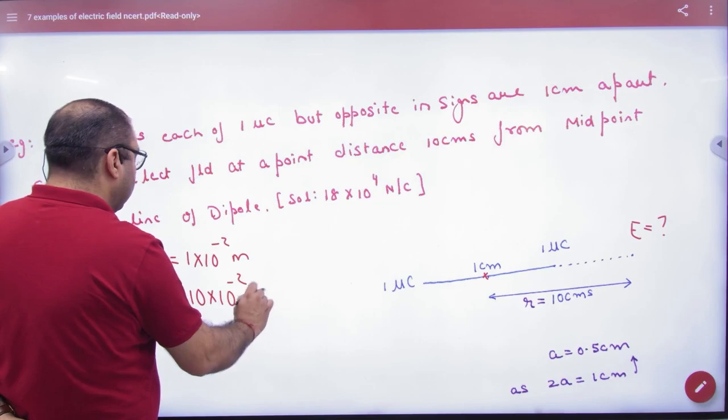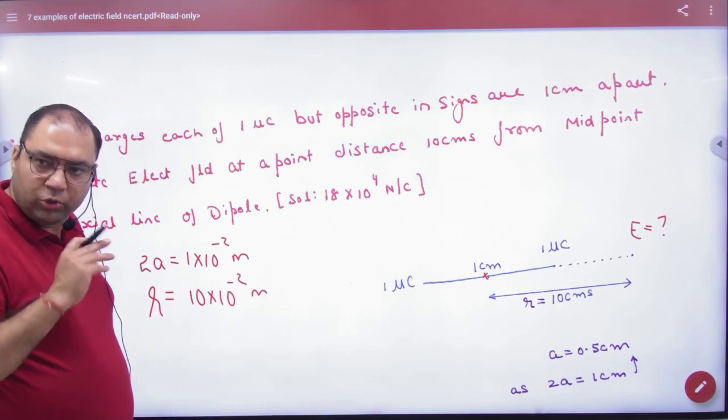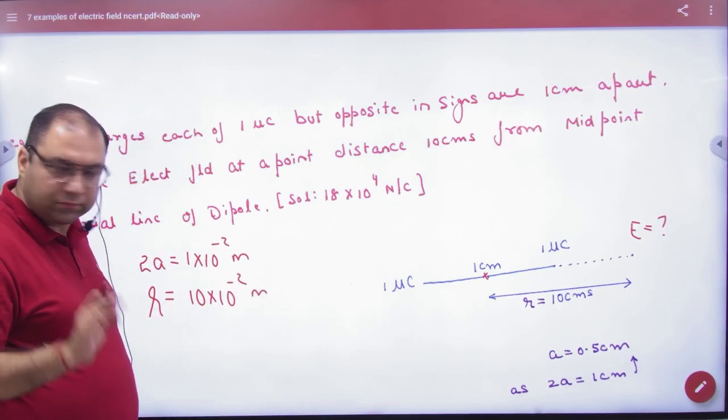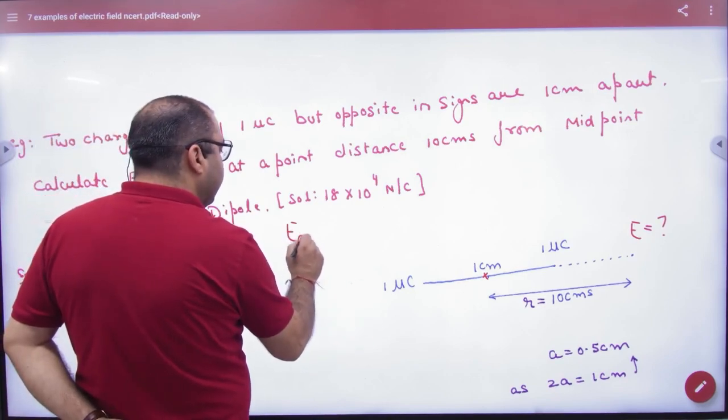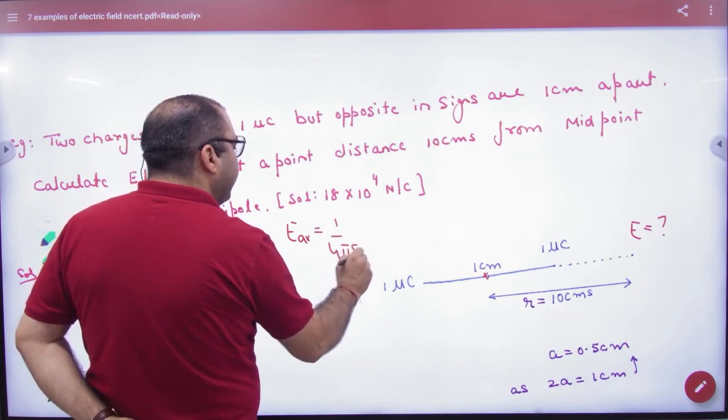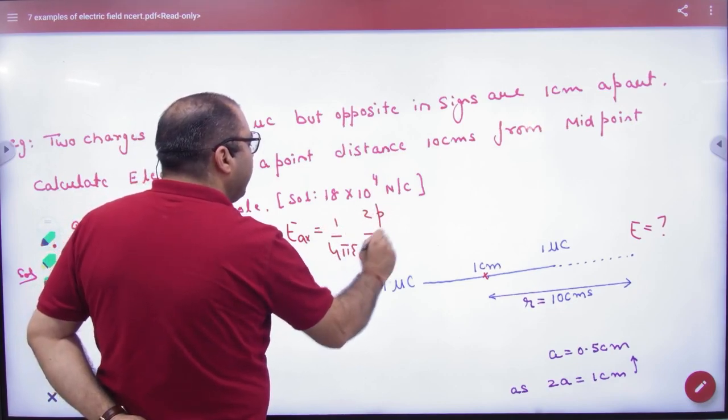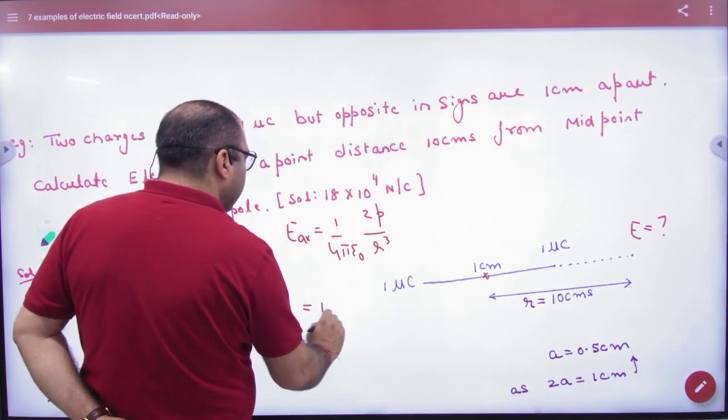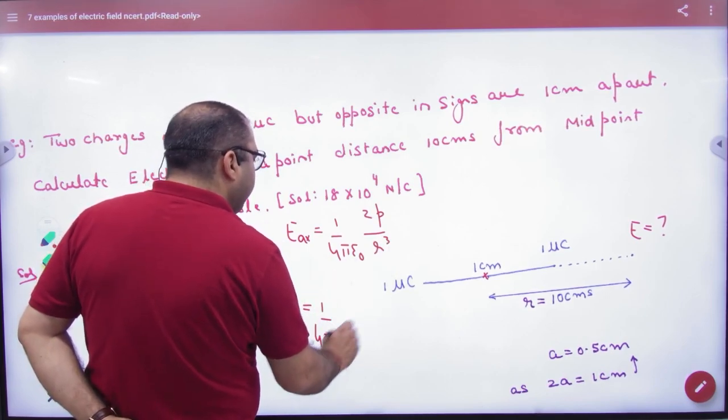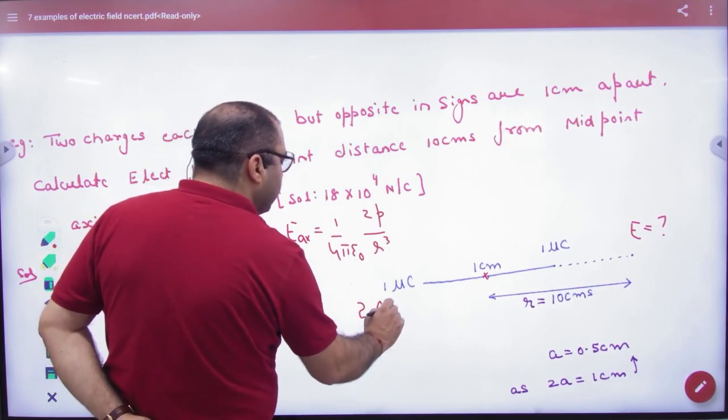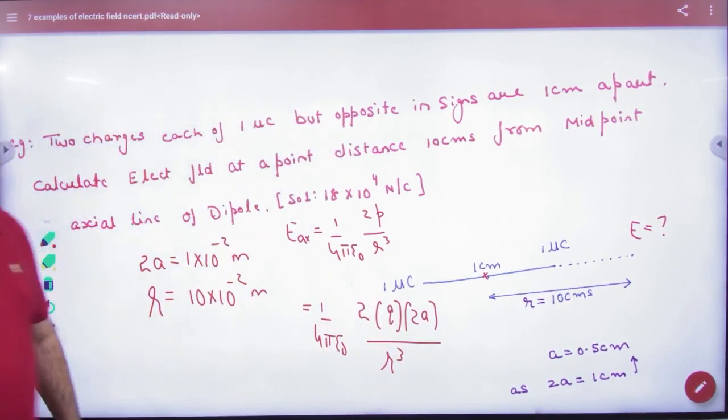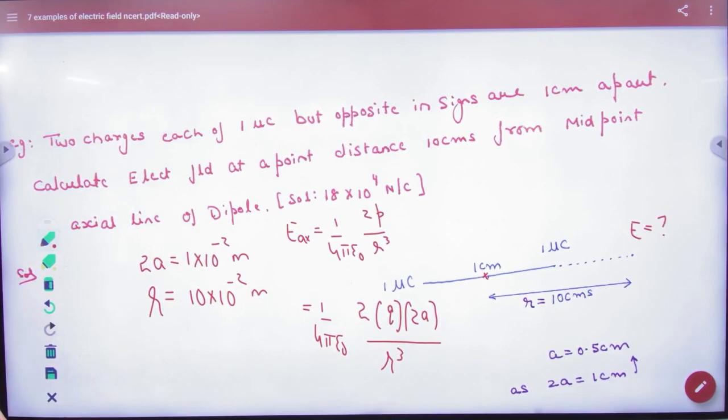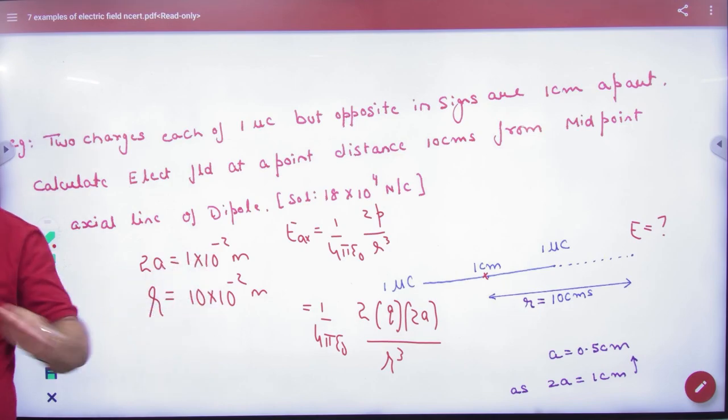What do you mean from center? R means 10 into 10 to power minus 2 meter. R value is 10 cm. So, 2a is 1 cm. R is 10 cm. Next, E axial formula, which is 1 by 4 pi epsilon 0, 2p by r cube. 1 by 4 pi epsilon 0, 2 into p, Q into 2a, divided by r cube. Now, in question you know q, 2a, and r. These are all distances from center. So, you can put all values.